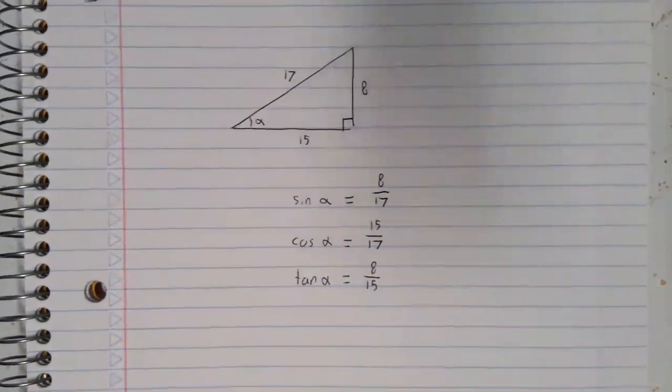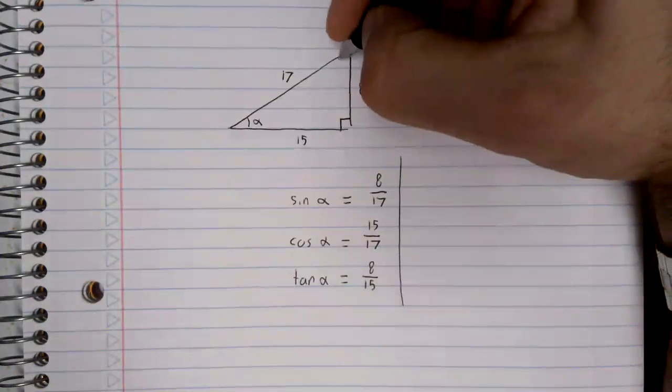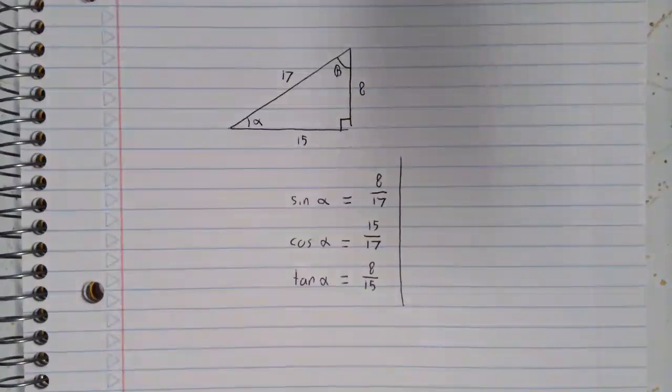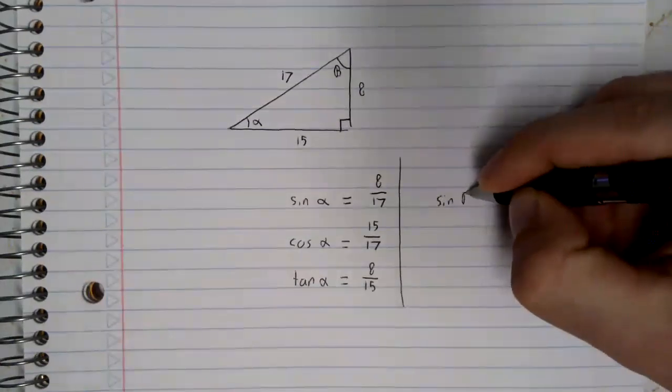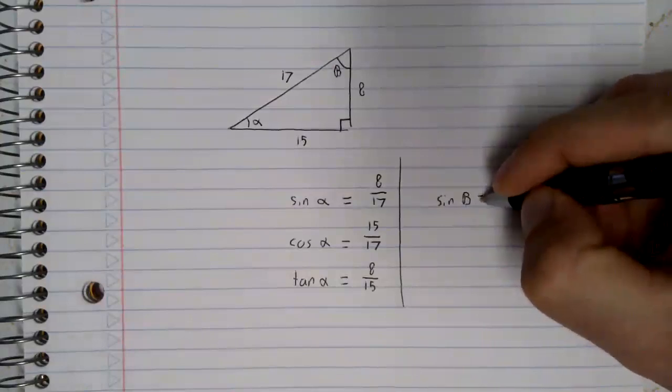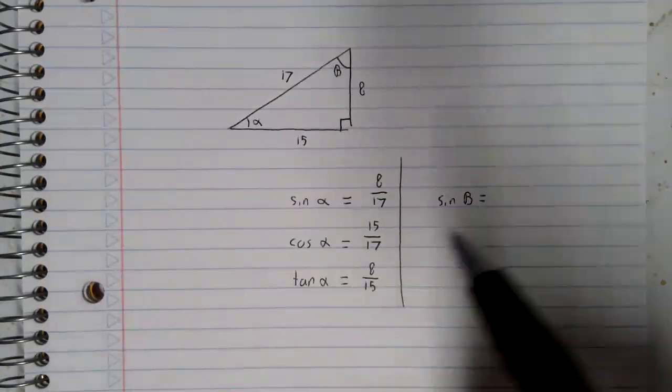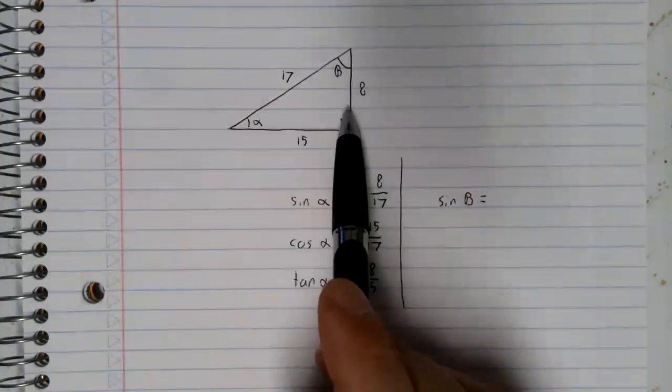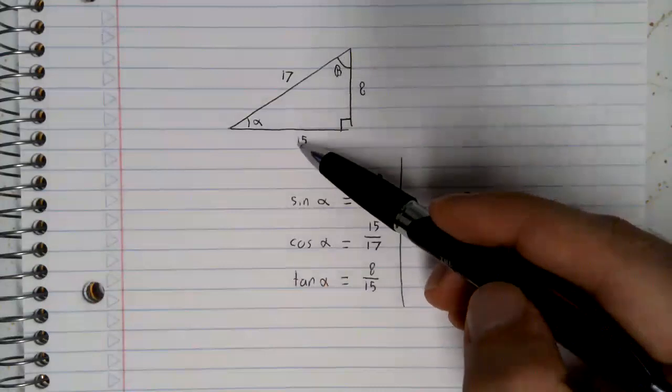Let's now write in this third angle. We called our first angle alpha. We'll call our second angle beta. The sine of beta is the opposite over the hypotenuse. Now notice that the opposite side is no longer 8. Opposite beta is 15.